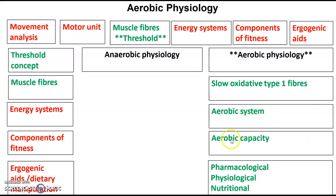On top of that, we've had a look at aerobic capacity — the definitions of aerobic capacity and VO2 max — then the factors that affect aerobic capacity or VO2 max. We've also had a look at methods of measuring or evaluating them, so we looked at multi-stage fitness test, Cooper's 12-minute Run, gas analysis, and the Queen's College step test.